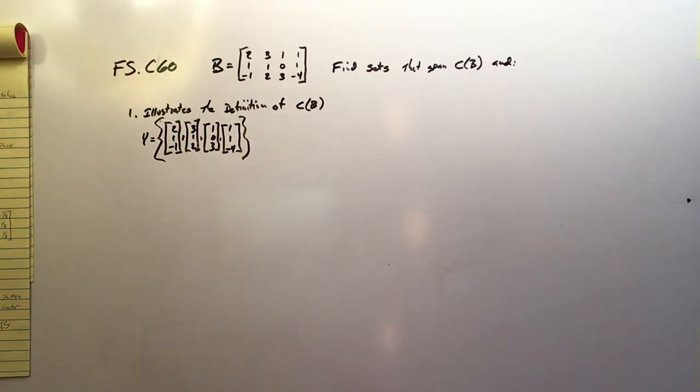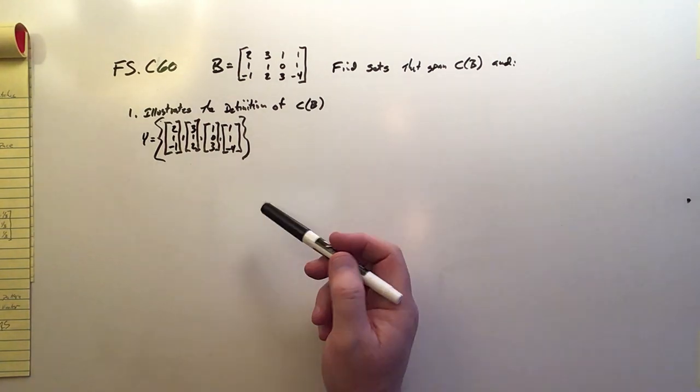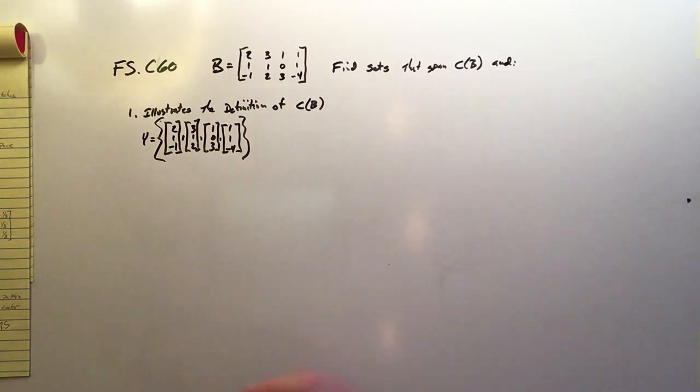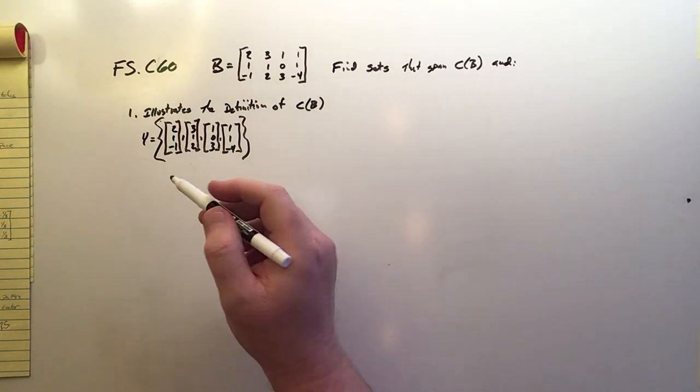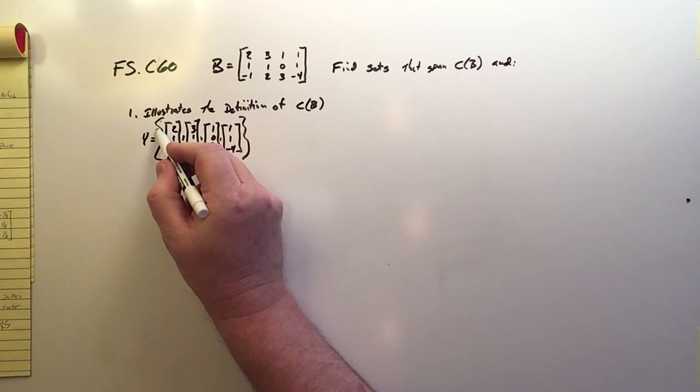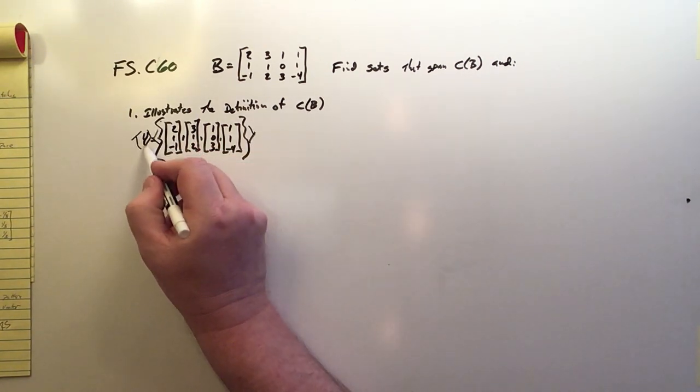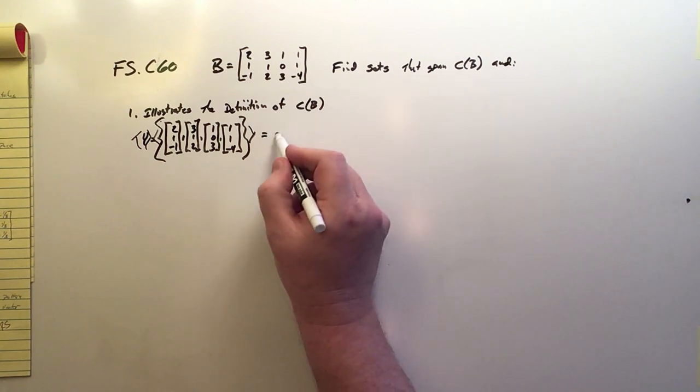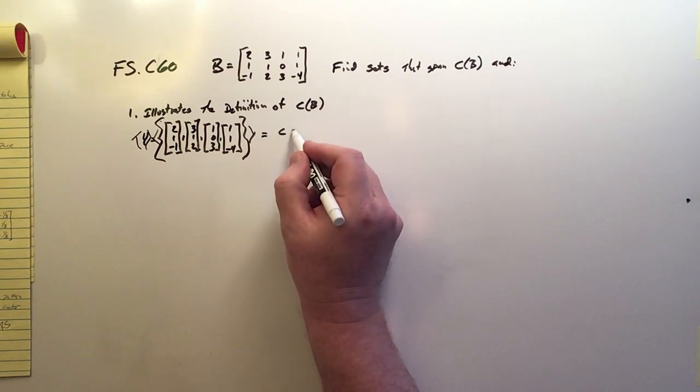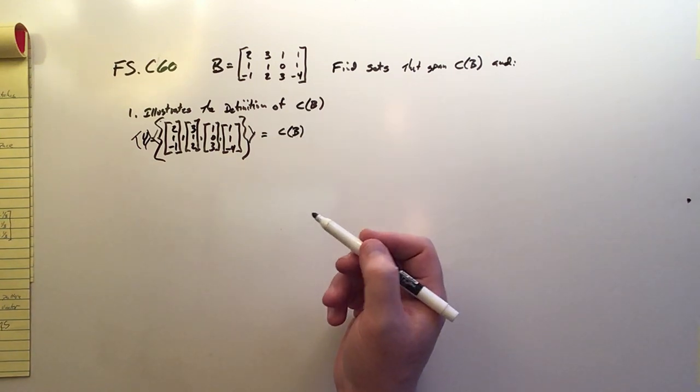This does much more than we need it to, and we'll find that that set doesn't really work very well. Again, a linear combination of these will certainly find the column space of B, so that's what we would want. We can do that by just throwing the spanning set symbol around, and say that this then would be equal to the column space of B.